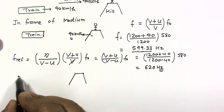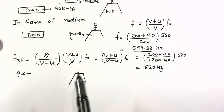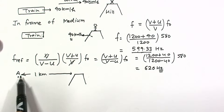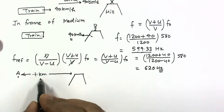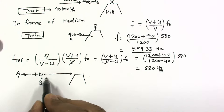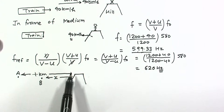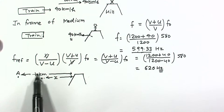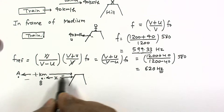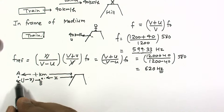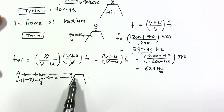Let the hill be here. Suppose initially the train is at point A, at a distance of 1 km from the hill. The sound travels from A to the hill and back. Suppose the train is now at point B when the driver hears the echo, and the distance from the hill at that point is x. So the sound travels 1 km to the hill, then x km back — making the total return distance x. The train meanwhile travels a distance of 1 minus x.